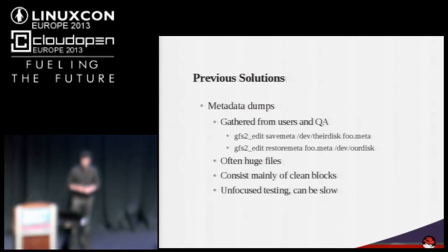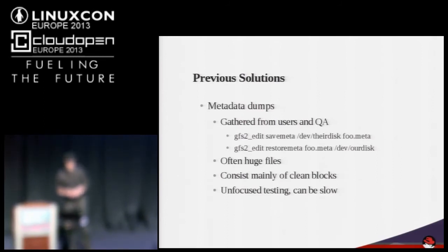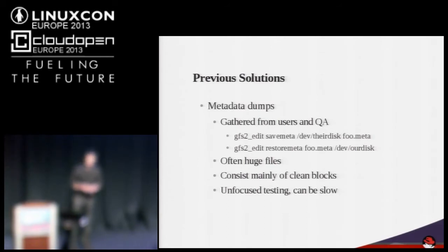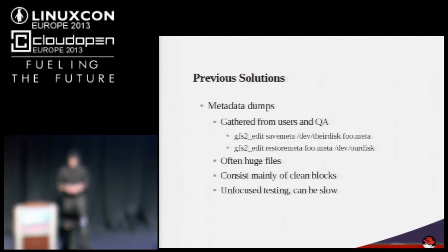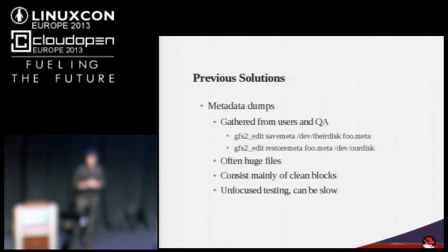These metadata dumps can be pretty big depending on the user's file system — going into gigabytes or terabytes — so it takes a long time to download them. We also need a lot of storage to keep a repository for future regression testing. Additionally, the metadata might only be corrupted at one particular point, so FSCK has to grind through all of the clean blocks before reaching the corruption. So it can be slow and it's not very focused.